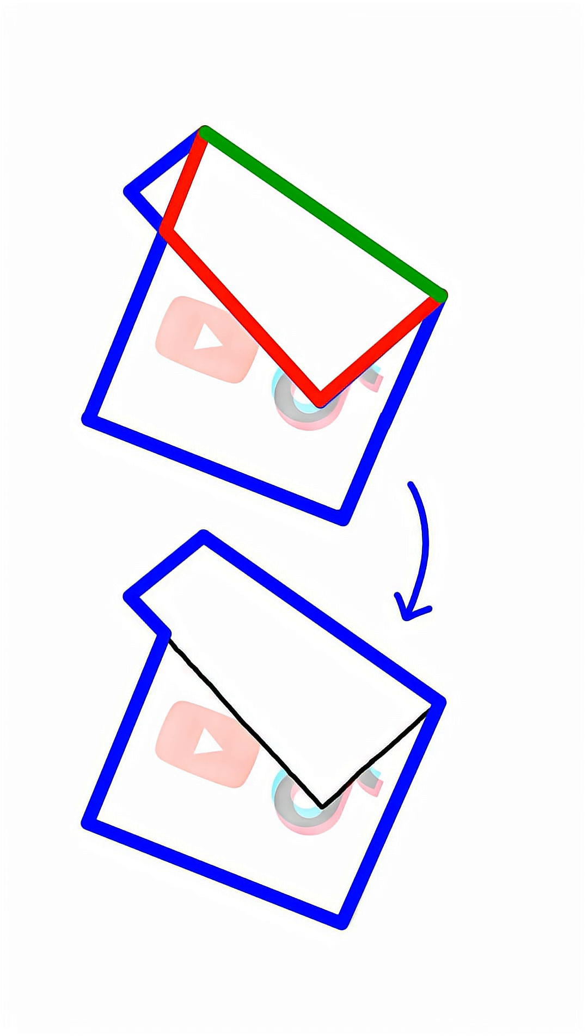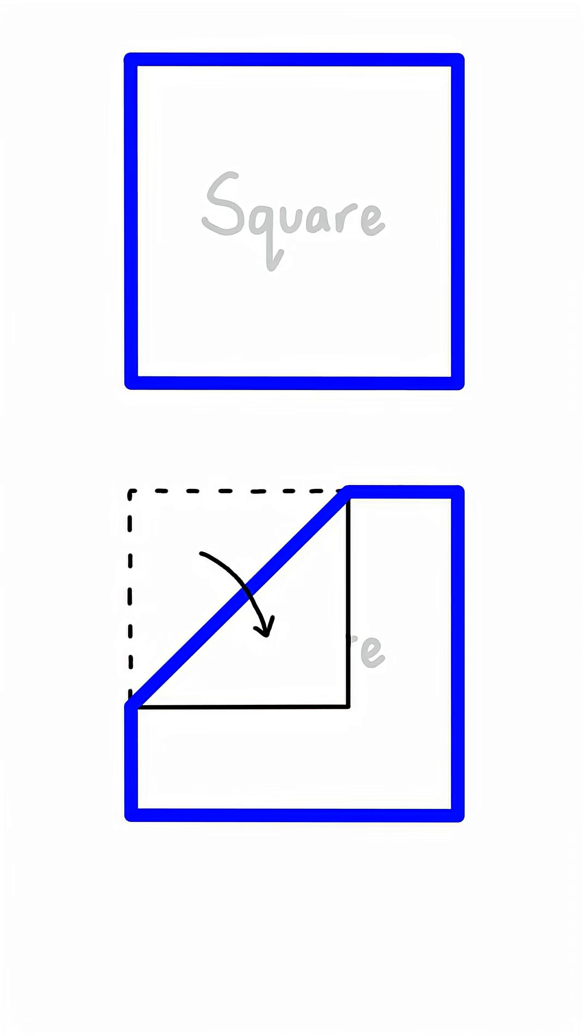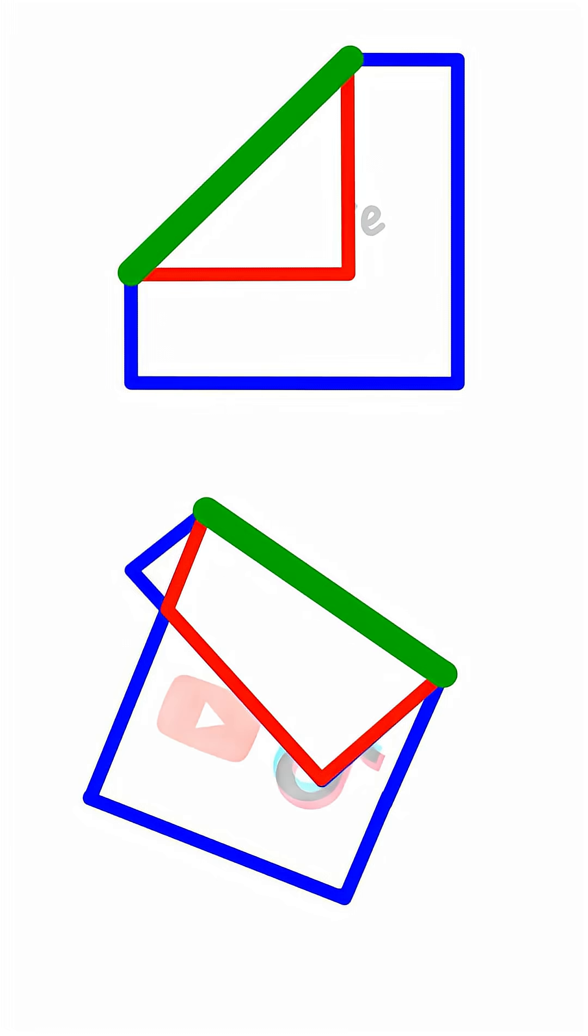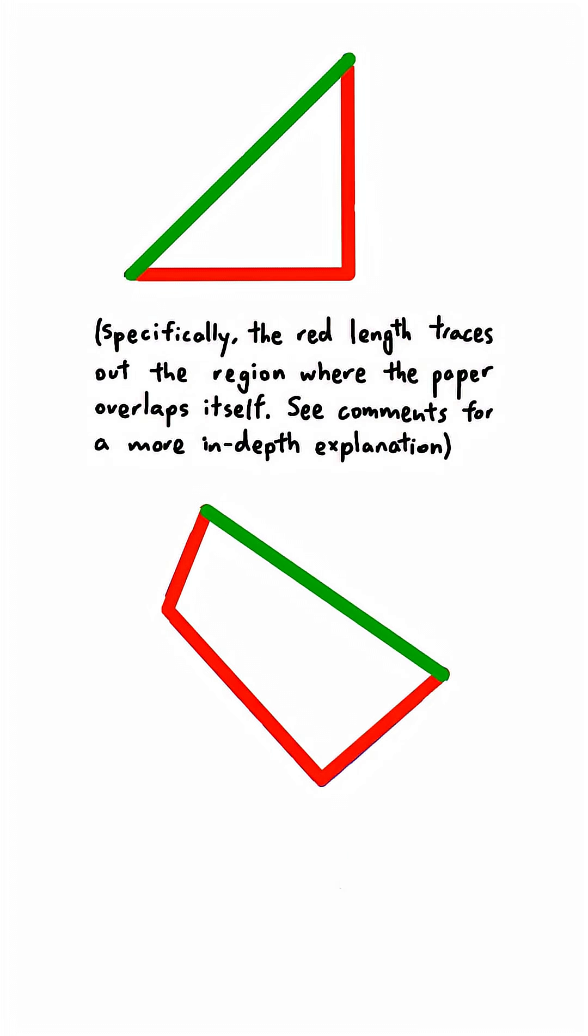But why is the red length longer? Let's try another example. Can you see the pattern? The green length is always the fold line, and the red length is always connected to it. The green length is a straight line, the shortest distance between two points, so it's always shorter than the red length. Therefore, we always subtract more than we gain, so our perimeter decreases.